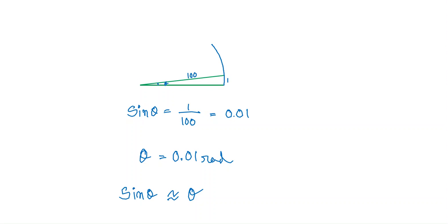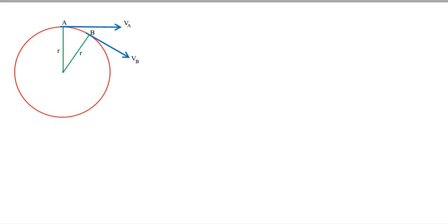Using this concept we are going to derive the equation for centripetal acceleration, that is V squared by R. Let's consider an object traveling in circular motion from point A to point B. At A the tangential velocity is VA and at B the tangential velocity is VB.